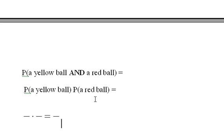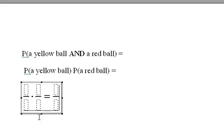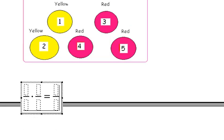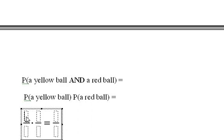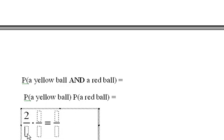The probability of getting a yellow ball, it's pretty clear on the first draw, is two out of five. So we'll put two here, five here. And then the probability...